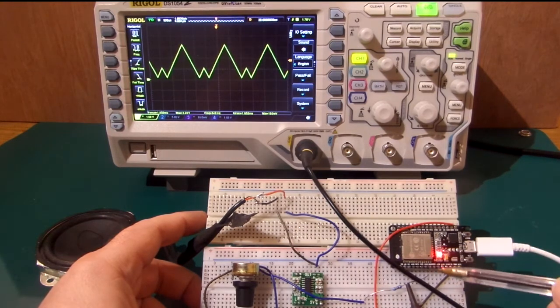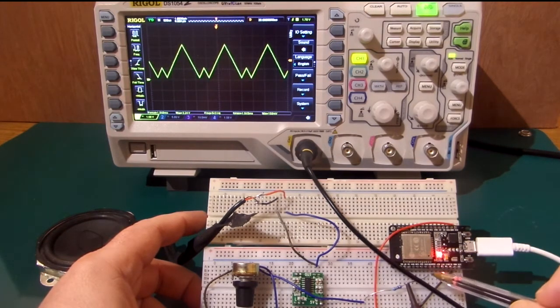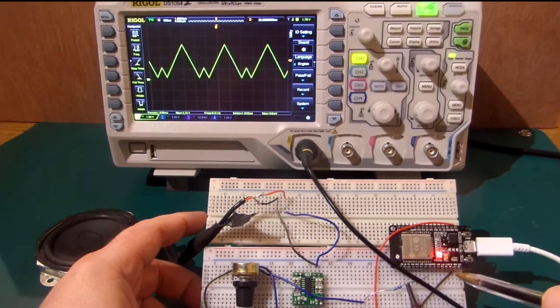On this ESP32 it has two DACs, one's on GPIO25, one's on GPIO26.